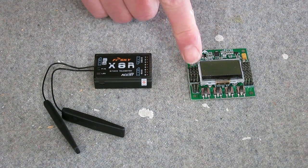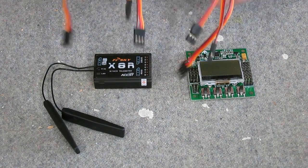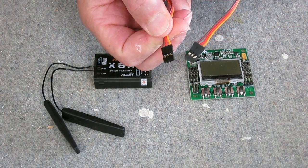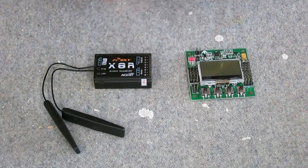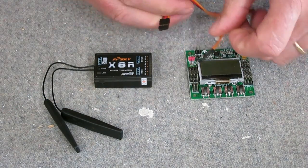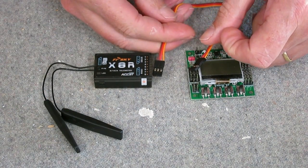To connect your receiver to the KK2 board, you'll need four male to male servo leads. That's for aileron, elevator, throttle, and rudder, and they connect to the left hand side or the input side of the board.